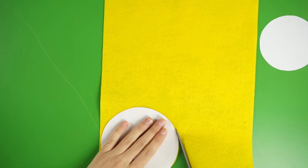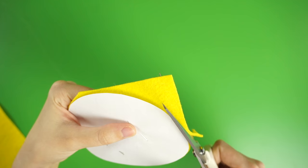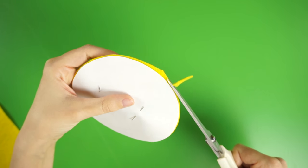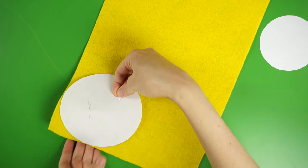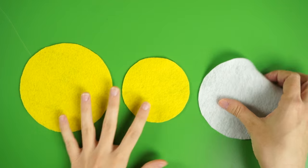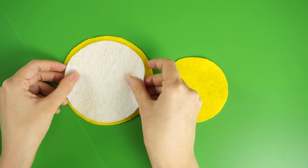Cut out the smallest and largest circles in your citrus-colored felt and the medium circle in white felt. Pin the paper templates down to the felt to make this step a little easier. Place the white circle on top of the largest circle.